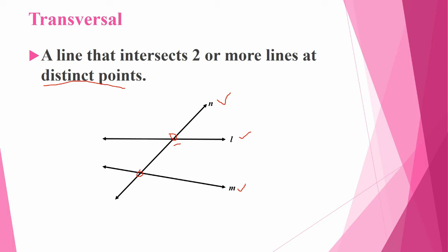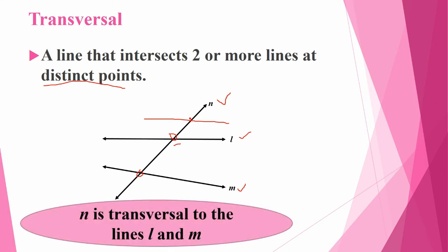Not only two lines — maybe it will be three lines. In three lines, one line is crossed. So here three different intersecting points are there. That is only called transversal. We can write: N is transversal to lines L and M.